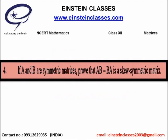First of all, go through the problem. The problem is that there are two matrices A and B and they are symmetric matrices. Now the most important thing is that we have to prove that AB minus BA is a skew symmetric matrix.